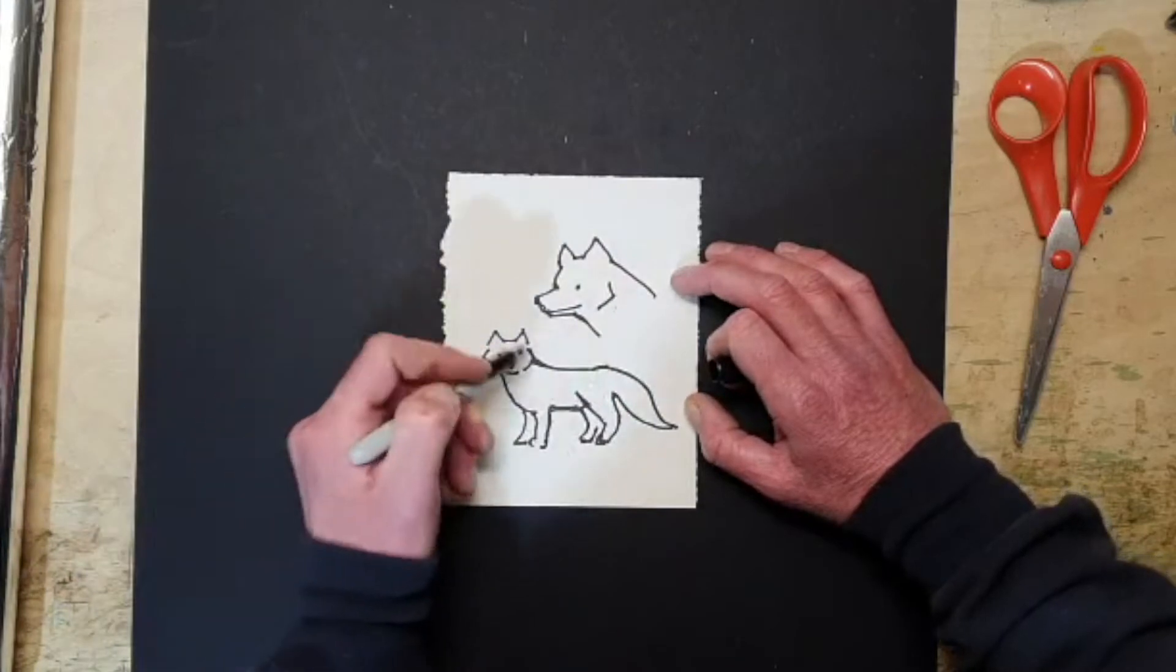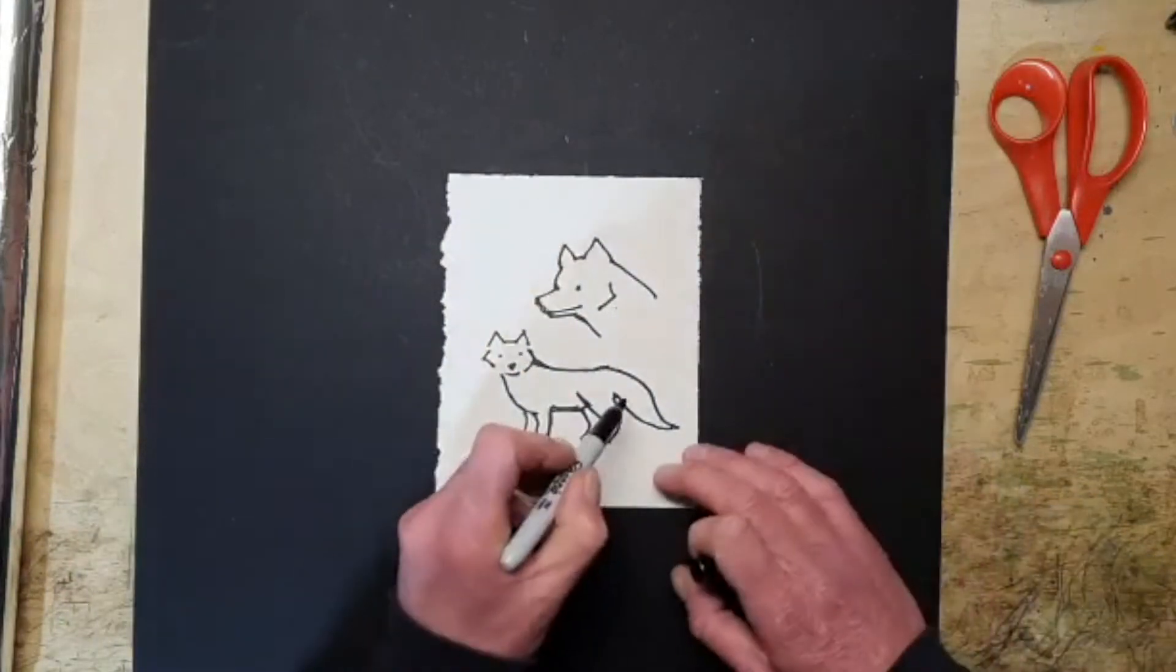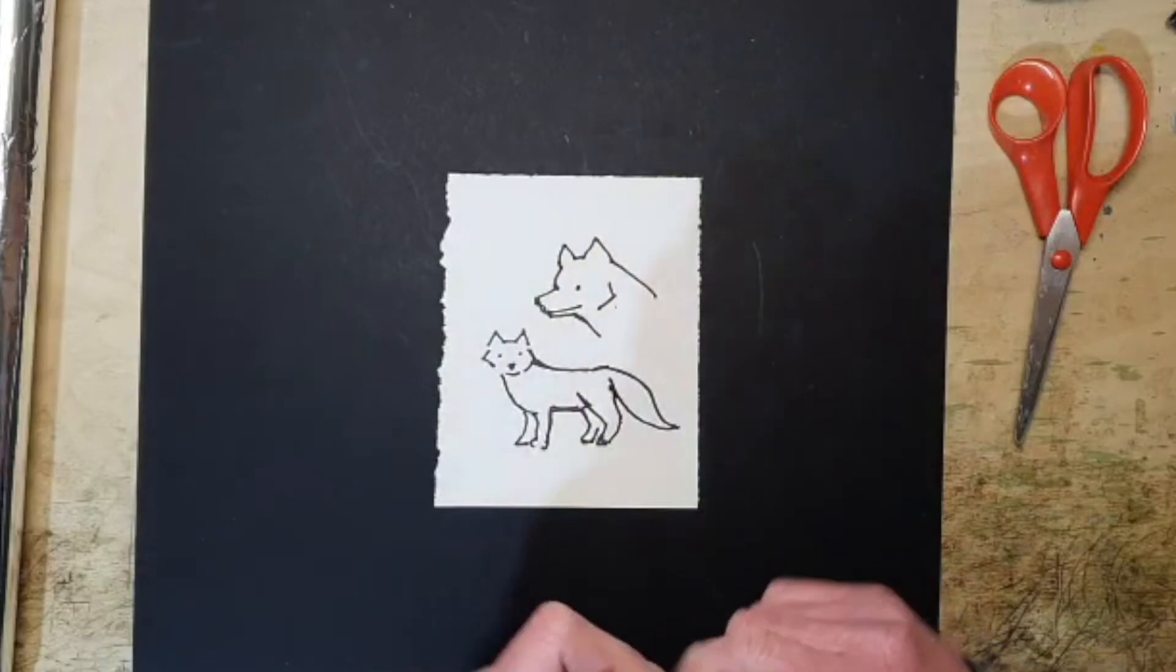Kind of a diamond shape, just a diamond shape here. So that's the drawing. Now we're going to go ahead and make it.